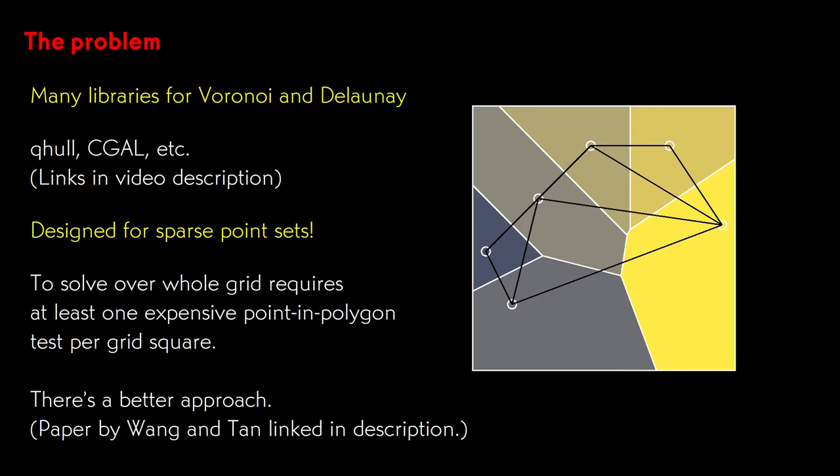There are several good computational geometry libraries, such as CGAL and QHull, that have routines to calculate Voronoi tessellations and Delaunay triangulations. Some of them even have n-dimensional versions, which are useful for cases such as using the Voronoi diagram for statistical clustering of data. I'll leave links to a couple of the libraries down in the video description.